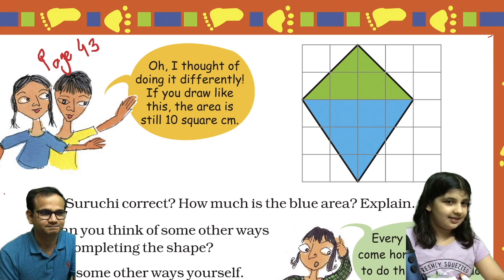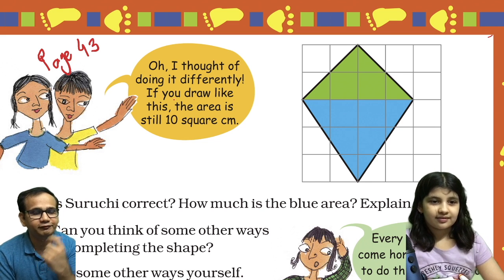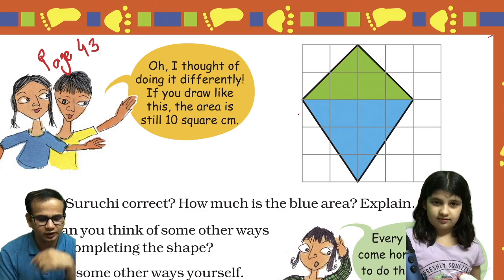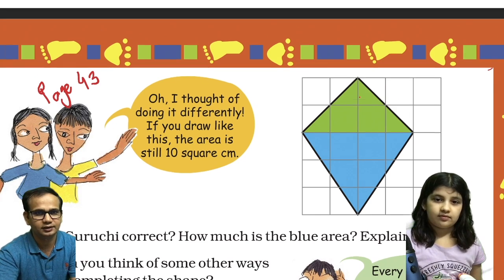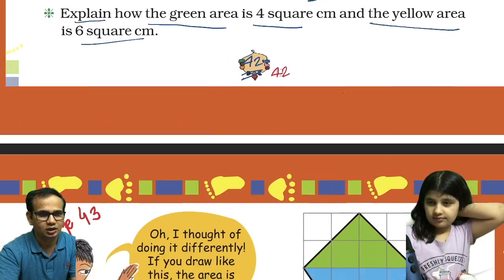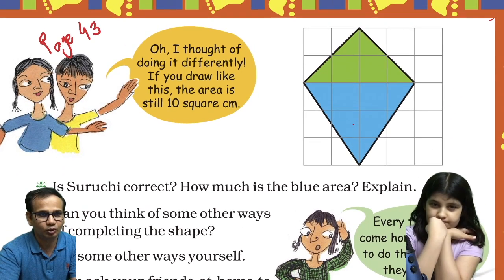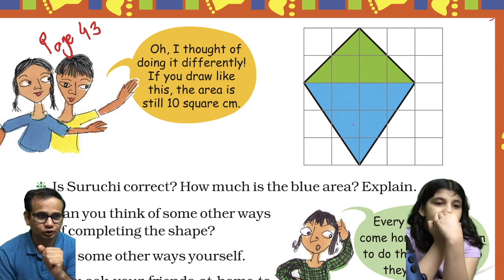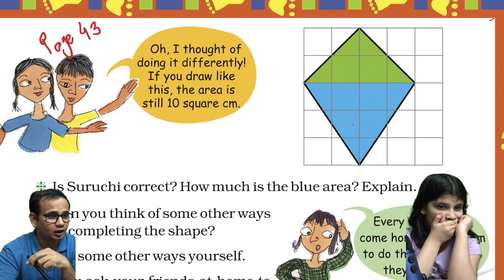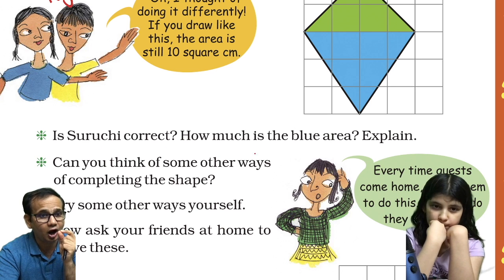So what is this girl saying to the boy? 'Oh, I thought of doing it differently. If you draw like this, the area is still 10 square centimeters.' The earlier one she tried to do it one way, but now he drew it differently — if you draw this way, the area is 10 square centimeters.